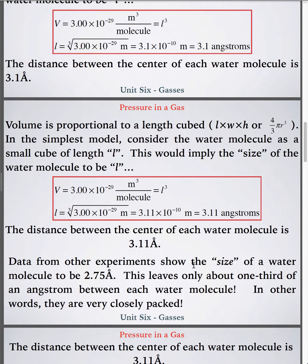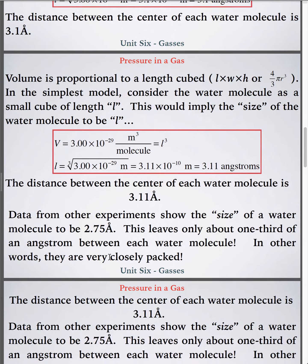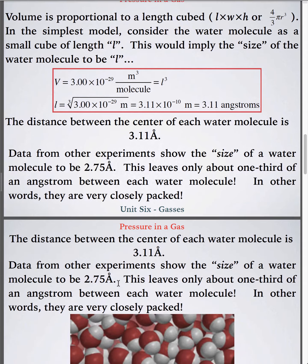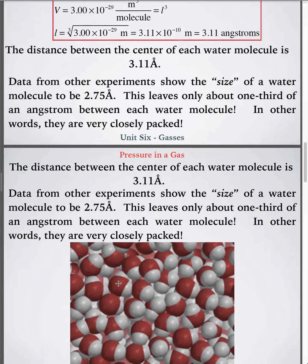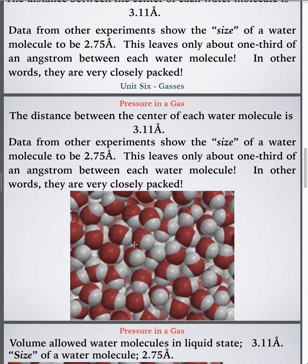It says here, data from other experiments, and not too hard to do actually, show the size of a water molecule to be about 2.75 angstroms. So, this was based, 3.1 angstroms was based on the density of water, how many water molecules per volume, and then take the reciprocal of that. This is based on the size of the molecule. So, my thought is the difference between 2.75 and 3.11 is kind of the distance between each water molecule, which isn't very much. What's that, 0.6 or so angstroms in between each water molecule?